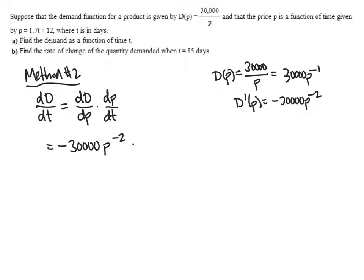And the derivative of p with respect to time, well, p as a function of time is given by this simple formula, 1.7t plus 12. So the derivative of that is just 1.7.